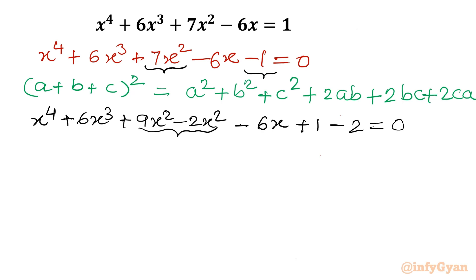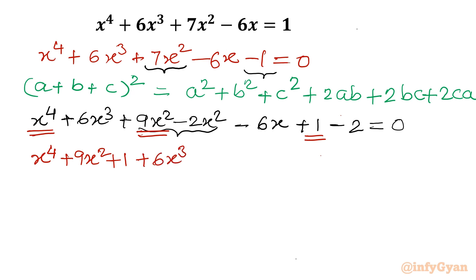Now I will use algebraic manipulation to set this into whole square form, targeting the first three terms: x⁴ + 9x² + 1. The remaining terms are written as: + 6x³ - 2x² - 6x - 2 = 0.